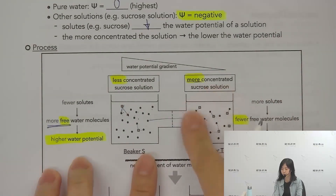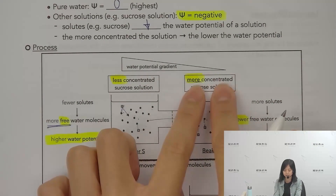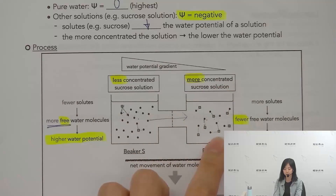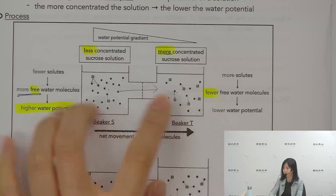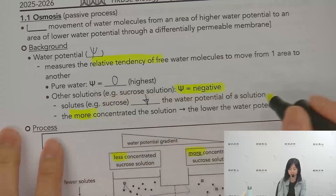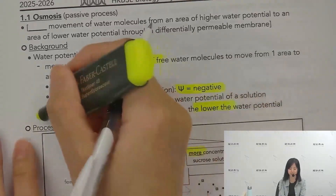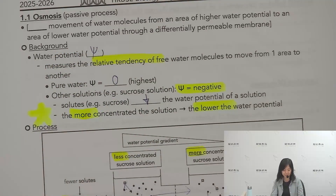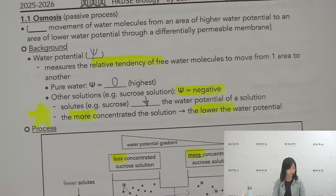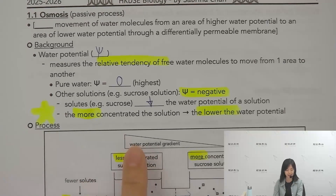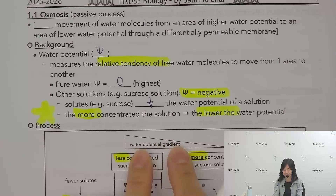When a sucrose solution or any solution is more concentrated, the water potential will be lower. So now we need to understand this relationship. Now we have learned the water potential concept. Now we will look at the water potential gradient.